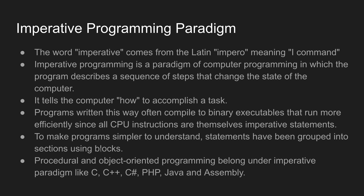The last important point: procedural and object-oriented programming languages belong under the imperative paradigm. For example, C, C++, C#, PHP, Java, and assembly languages all follow the imperative programming paradigm style. Java is an object-oriented language, but one programming language may follow multiple paradigm styles — Java follows both imperative programming paradigm style and object-oriented programming paradigm style.